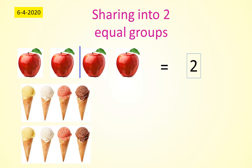See here 8 ice creams are there. Count 1, 2, 3, 4, 5, 6, 7, 8. I want to divide this into two equal groups. Equal means same, same. Then how many ice creams are there in one group? Yes, it is 4.